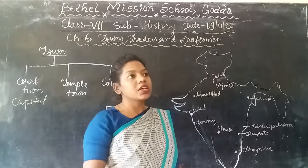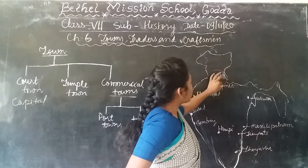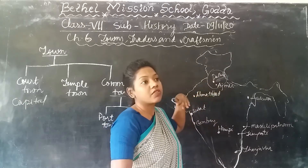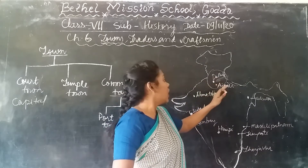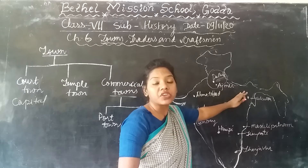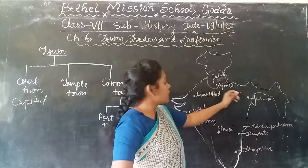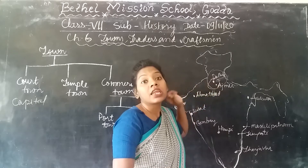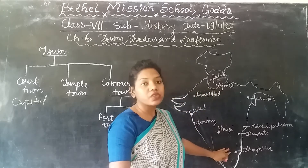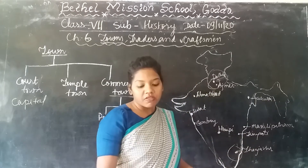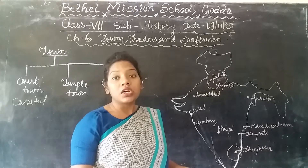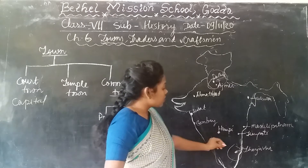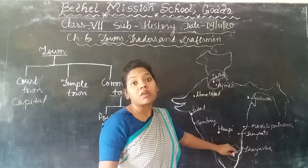For example, during the Delhi Sultanate, they used to rule and administrate from Delhi, looking after different regions of the kingdom. So Delhi became one of the developed towns, flourishing in an administrative way. And in the southern region, one of the best examples is Thanjavur. Thanjavur is also famous as a capital town, developed during the Chola dynasty.